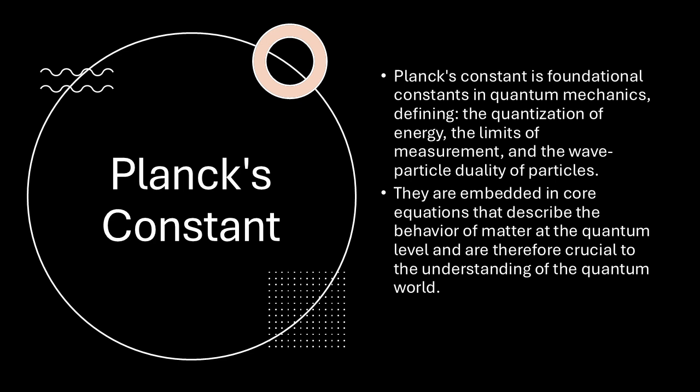So it depends on how we observe them. Exactly. The way we choose to observe a particle influences how it behaves. It's like the universe is presenting us with a choose-your-own-adventure story. That's wild. So it's not just that we can't know everything with perfect certainty, but the very act of observing influences the outcome. It's like the universe is constantly changing based on how we're looking at it. And again, Planck's constant is a key player in this strange dance between observer and observed. It defines the scale at which these quantum effects become significant.